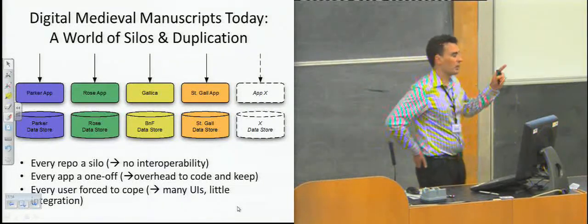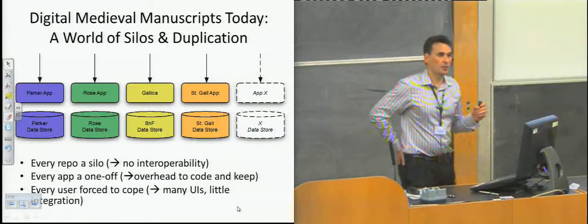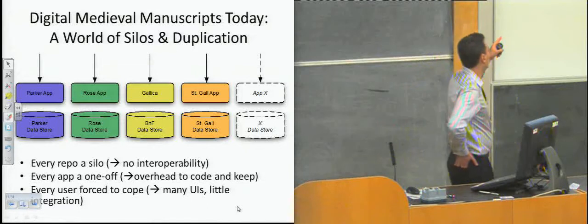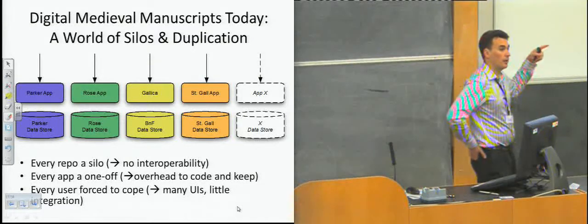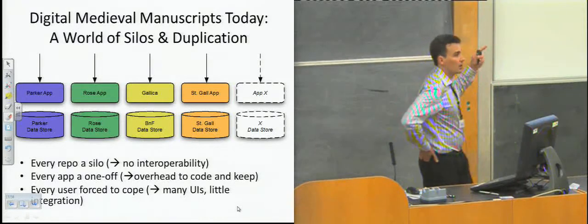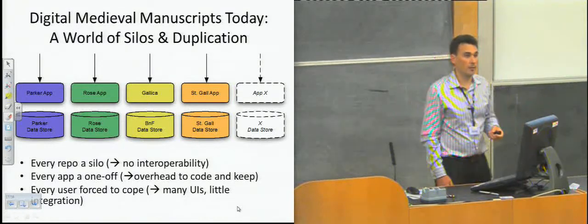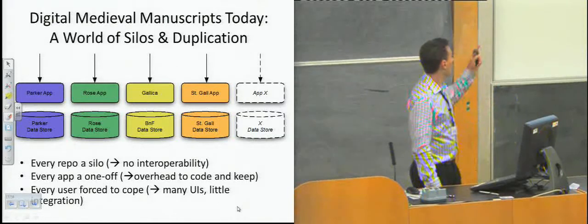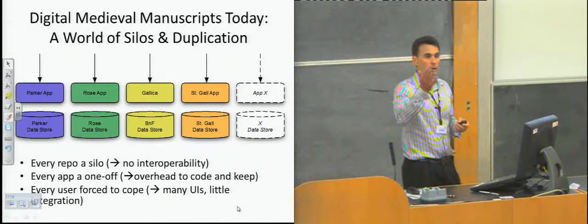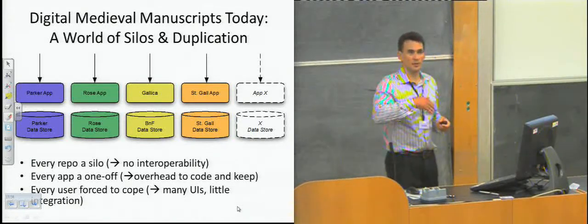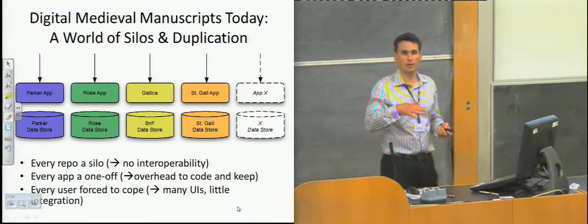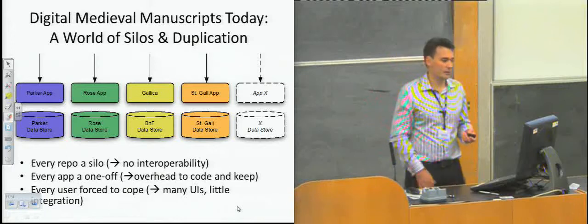Every repository is a silo. Every application is also a one-off. That means each of us are totally fronting the development cost and the maintenance cost of inventing our own wheel. And ours is maybe slightly rounder with shinier spokes than someone else's. But others have got big tires that go off-road. They're all essentially doing the same thing. And from the user's perspective, just the variety of interfaces — the buttons are in all different places — and navigating the tools is actually non-trivial.